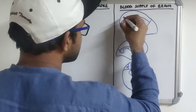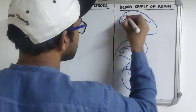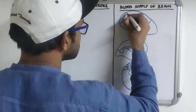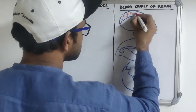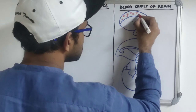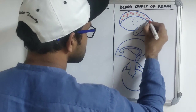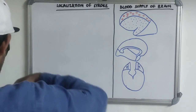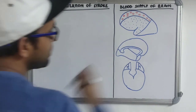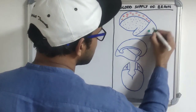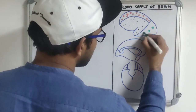The frontal pole and superior medial border strip are supplied by the anterior cerebral artery, and the lower temporal and occipital pole is supplied by the posterior cerebral artery.